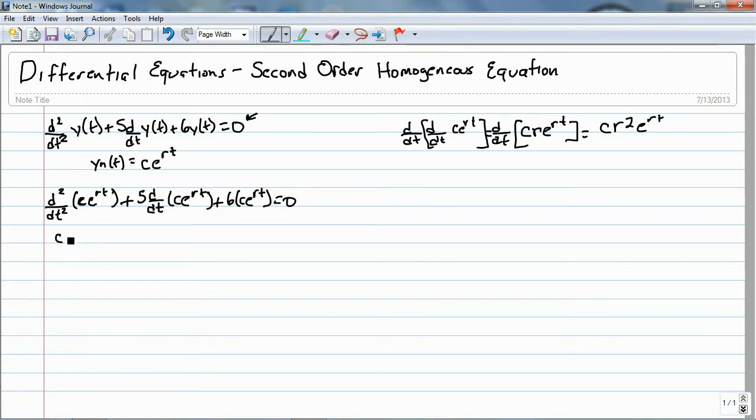So, Cr²e^(rt) plus 5Cre^(rt) plus 6Ce^(rt) equals zero.